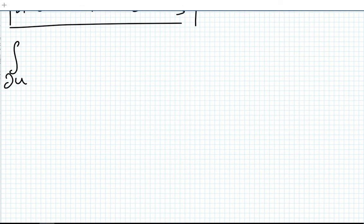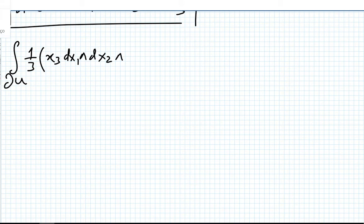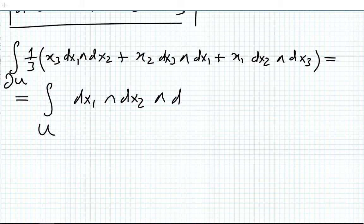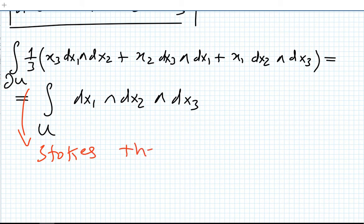So now we can say that dω equals dx₁∧dx₂∧dx₃, meaning one-third of (x₃ dx₁∧dx₂ + x₂ dx₃∧dx₁ + x₁ dx₂∧dx₃) is the form whose exterior derivative is dx₁∧dx₂∧dx₃. By Stokes' theorem, the integral over the boundary ∂U of ω equals the integral over the manifold U of dx₁∧dx₂∧dx₃.